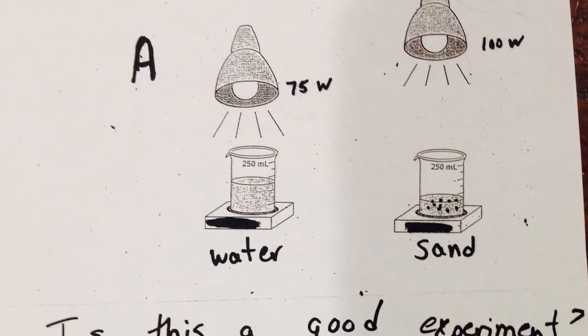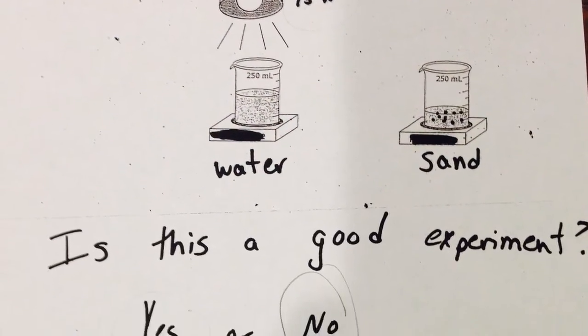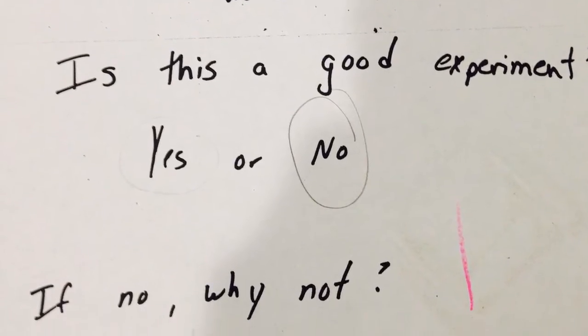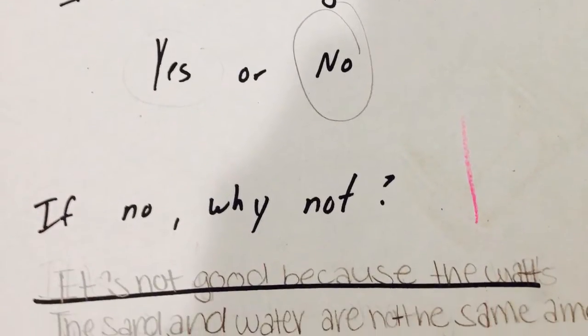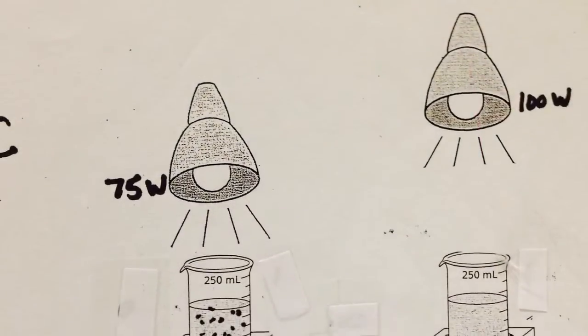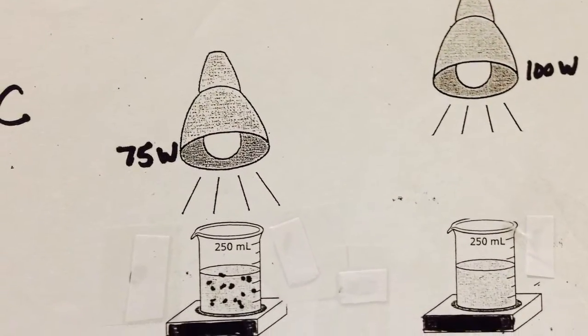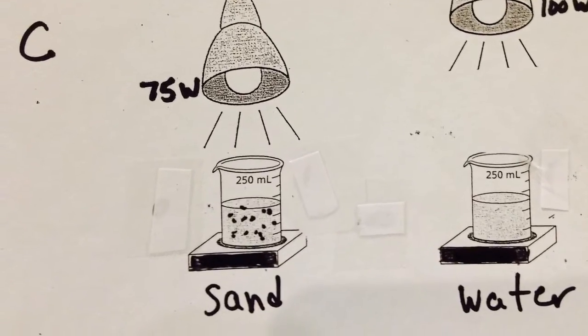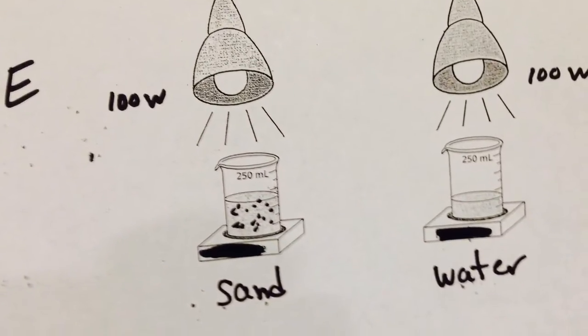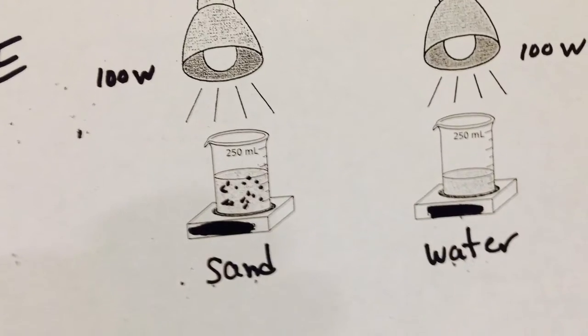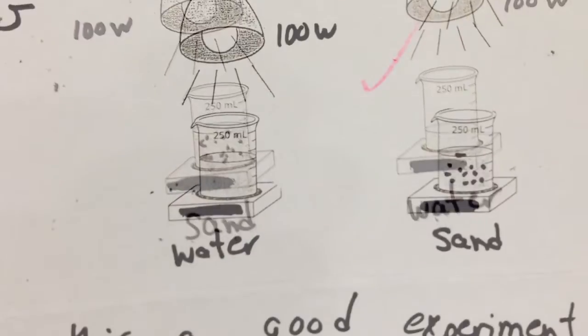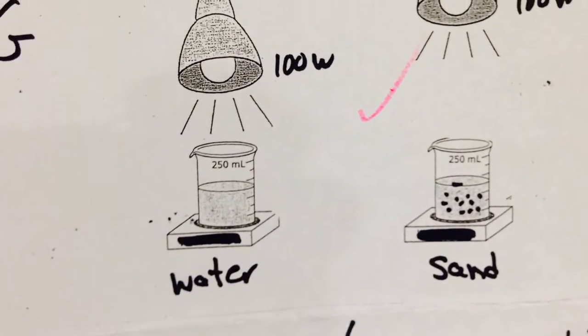Before we begin experimenting and recording data, I want my students to be able to identify an experiment in which variables are controlled well. So I give them a series of diagrams that I've cut and pasted. In some of the pictures, the bulbs are of different watts. In other pictures, there is not the same amount of sand and water. And in others, the bulb is a different distance from one container than it is another. So for all of those reasons, an experiment could not be very scientific.